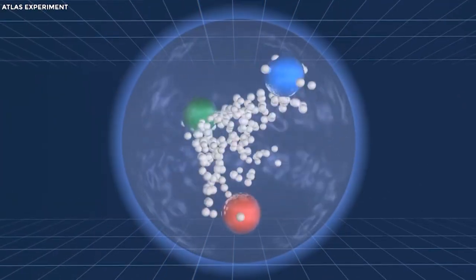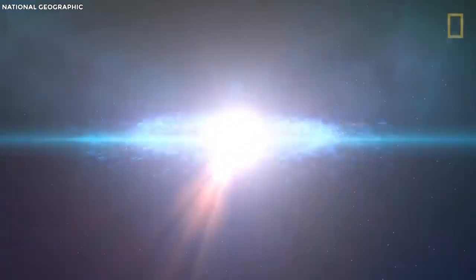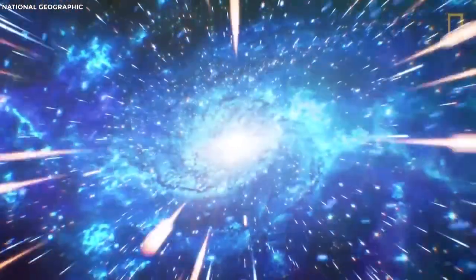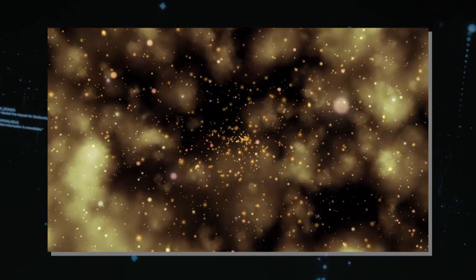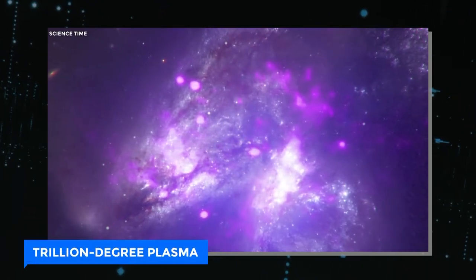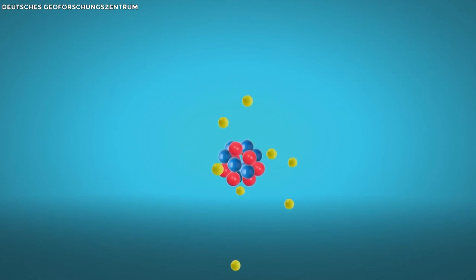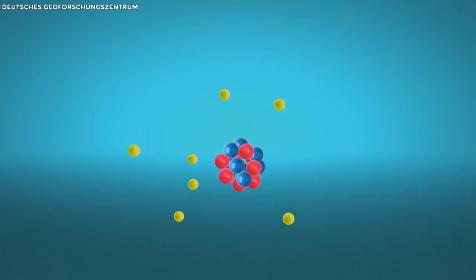These X particles are traced back to a fleeting era, a mere few millionths of a second post the colossal Big Bang. At that juncture, the cosmos was a boiling crucible of brilliance, a trillion-degree plasma soup teeming with quarks and gluons. These elemental constituents, upon cooling and coalescing, evolved into the more enduring protons and neutrons.